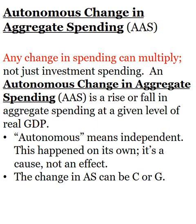The original round of spending could be investment spending, but it also could be C — consumer spending — or G — government spending. Let's say the government decides to increase their spending on Medicare. That would be an autonomous change in aggregate spending, because all of a sudden you have more money in the economy than before, and that can multiply. Or maybe consumers are optimistic and think the economy is looking really good — let's spend more money. Well, that spending translates into income for households, and that disposable income can start to multiply. So any round-one spending — consumer, investment, or government — can multiply.